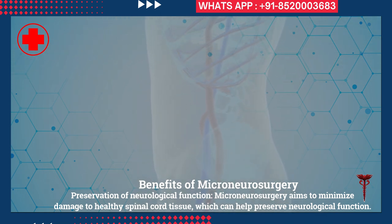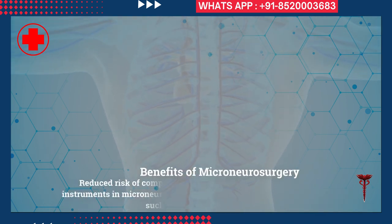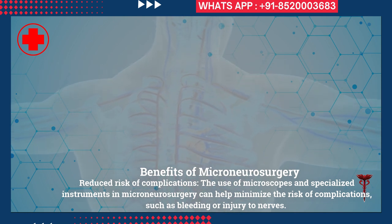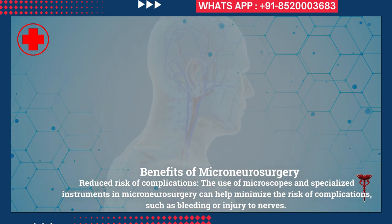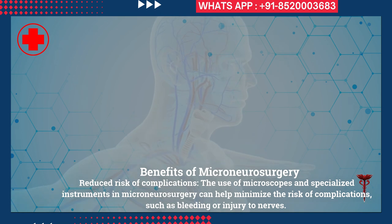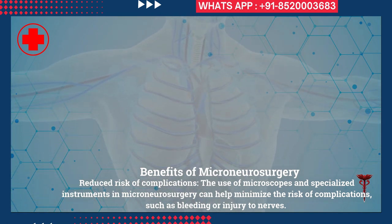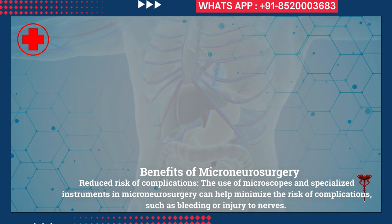Preservation of neurological function: micro neurosurgery aims to minimize damage to healthy spinal cord tissue, which can help preserve neurological function. Reduced risk of complications: the use of microscopes and specialized instruments in micro neurosurgery can help minimize the risk of complications such as bleeding or injury to nerves.